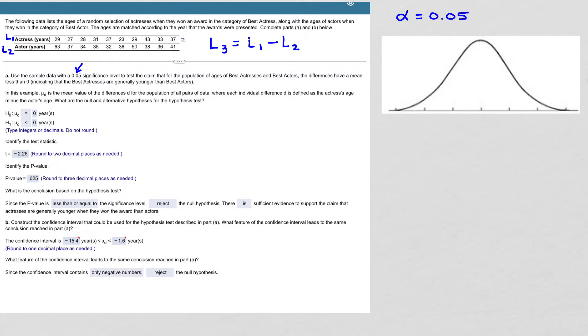This was a left tail test based on the alternative hypothesis that mu sub d is less than 0. So that means that 0.05 is in that left-hand tail.